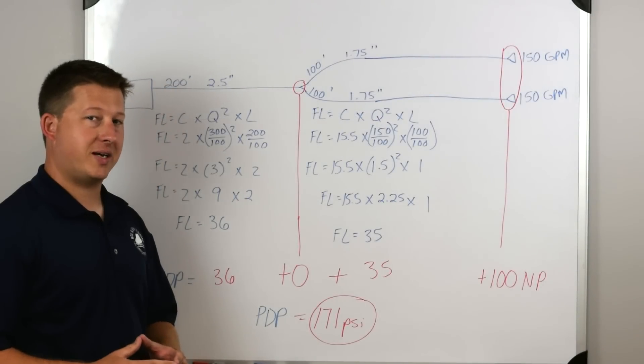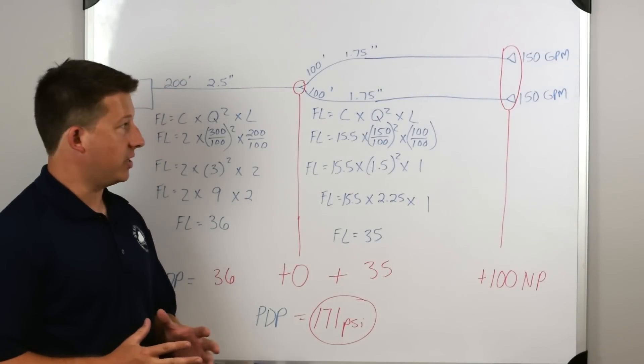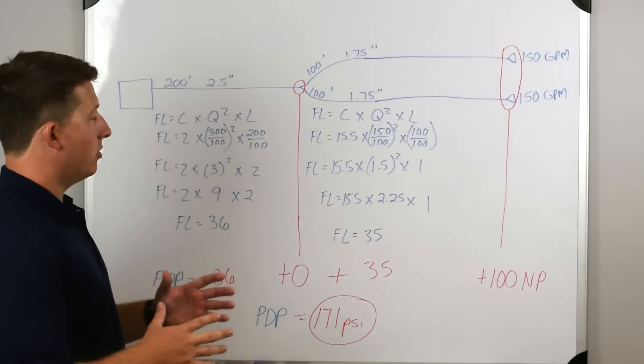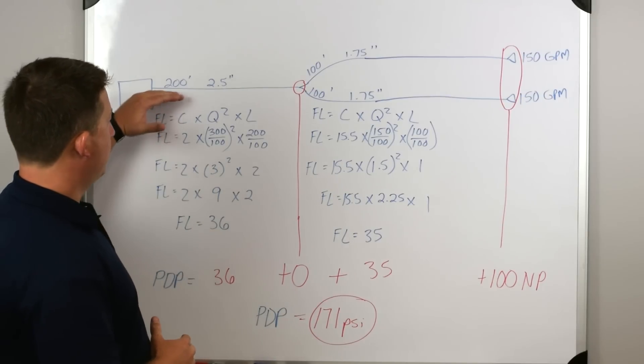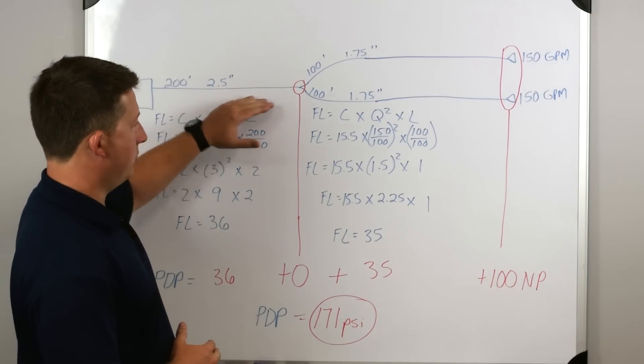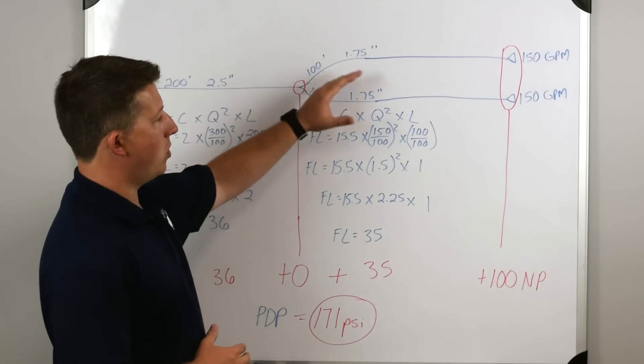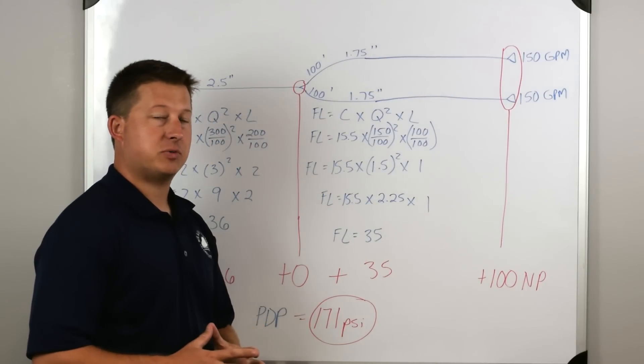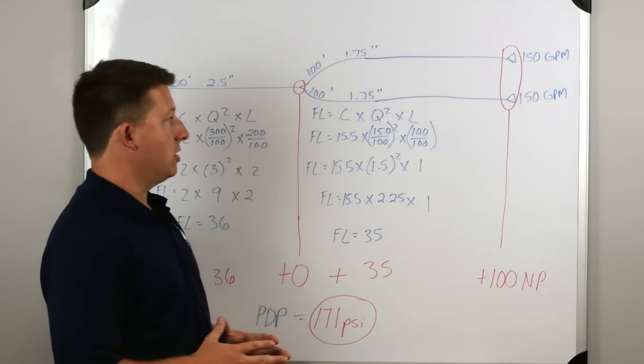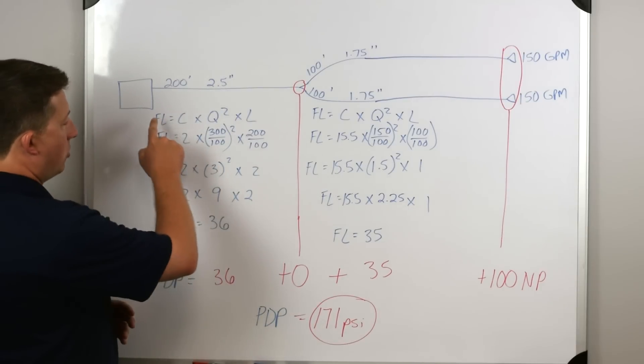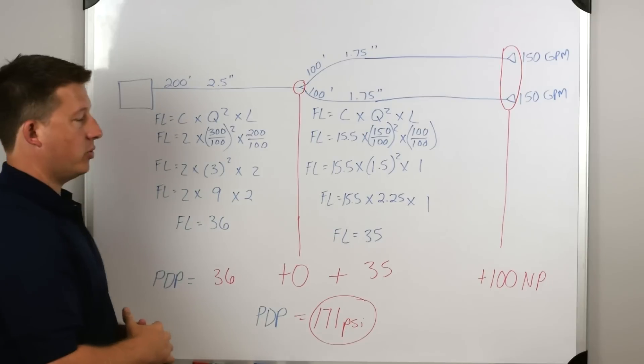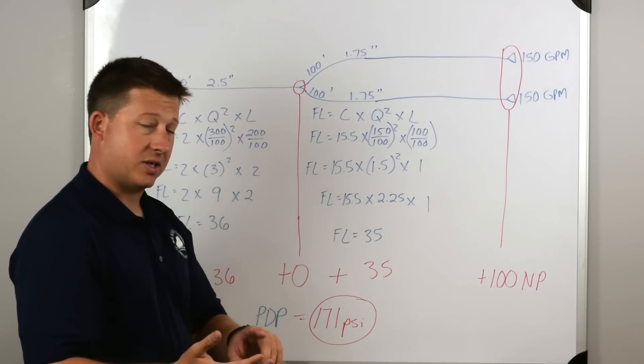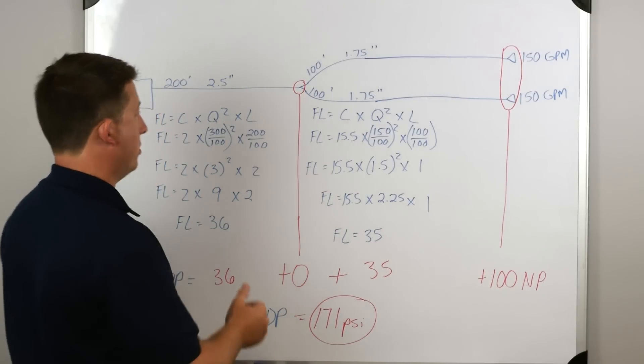In our next problem, we're taking a wye line scenario. So this is going to be getting a little bit more complicated. We have 200 foot of two and a half inch hose that's wyed into two 100 foot inch and three quarters. Each of those are flowing 150 gallons per minute out of a fog nozzle. So let's go back and look at it from left to right. Do we have what we need to work out the problem? Do we have our length of our hose, the size of our hose, and the amount of water moving through the hose?